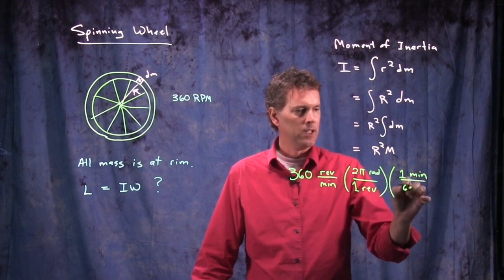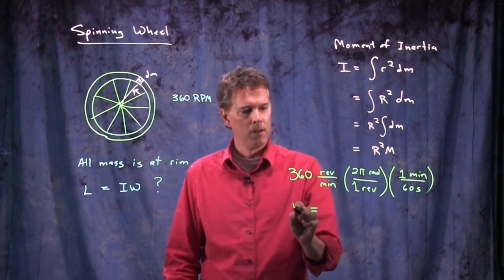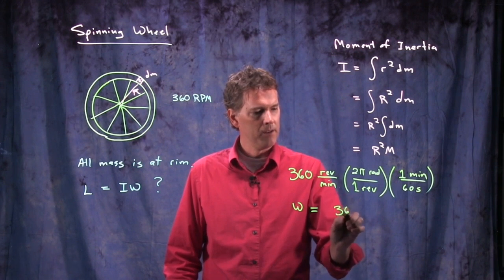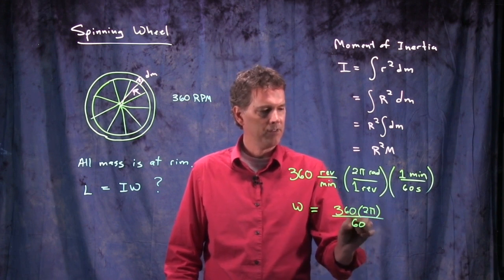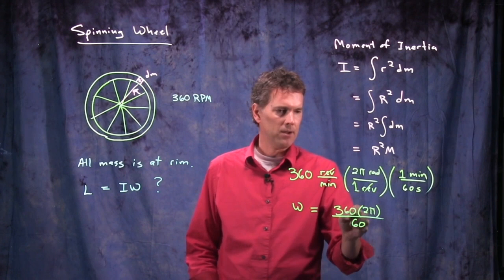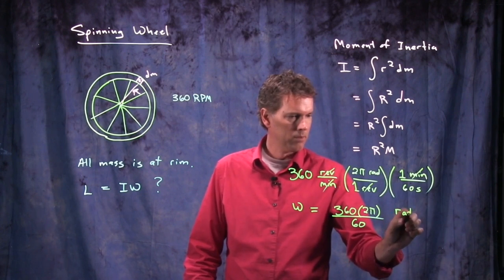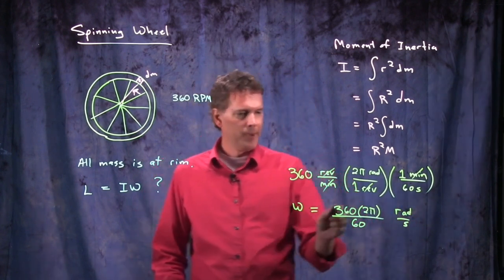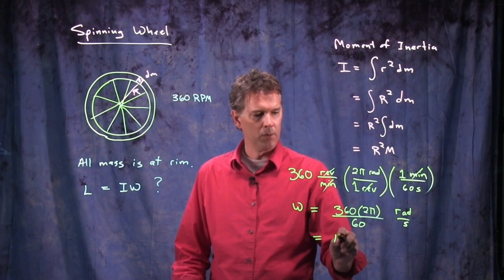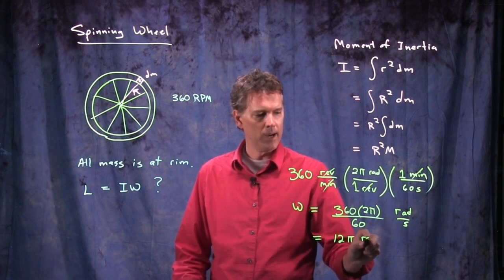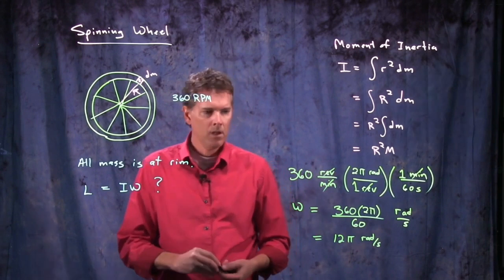One minute is 60 seconds. And so this whole thing becomes what? Omega is now 360 times 2 pi divided by 60. The revolutions canceled out, the minutes canceled out, and we ended up with radians per second. 360 over 60 is just 6. 6 times 2 is 12, and so we get 12 pi radians per second. We just arbitrarily chose 360.